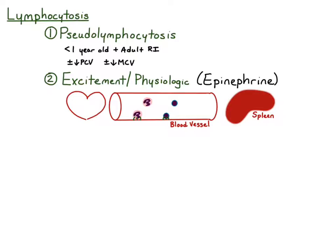With an epinephrine release, there's an increased cardiac output due to increased heart rate and increased stroke volume, and this results in increased blood flow through the capillaries and blood vessels. This force washes the marginal neutrophils and lymphocytes into the circulating pool, so there's a redistribution of neutrophils and lymphocytes into the circulating pool.